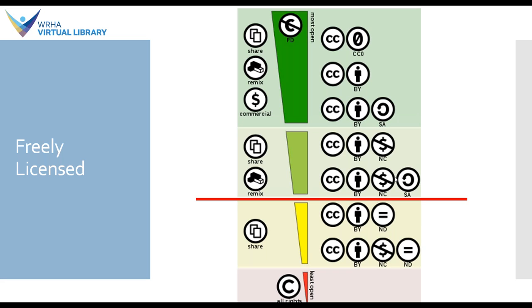As we continue down the diagram we get more and more restrictive. The next usage right is SA or share alike, which essentially means you can reuse, revise, remix, or share the material but whenever you do so you must do so under an equivalent license. So if a work is released under CC BY SA and you want to use it in a book or coursework, you can, but you have to release that new work under a same or equivalent license. Moving further down we have NC or non-commercial: you can reuse the material but you can't make any profit off of it. NCSA adds the share-alike requirement on top of that.